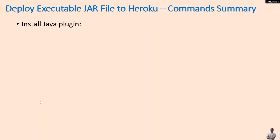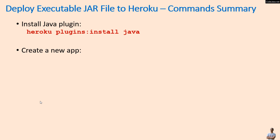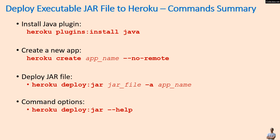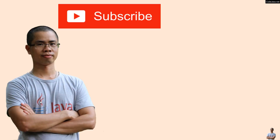You have learned how to deploy an executable JAR file to Heroku. Here is a summary of the main commands: to install the Java plugin for Heroku CLI, to create a new app without a git remote, to deploy a JAR file, and to see the options of the deploy Java command. I hope you found this video helpful — please subscribe to my channel, like, comment, and share this video. Thanks for watching.